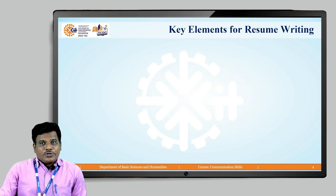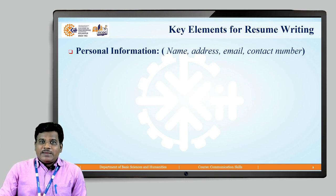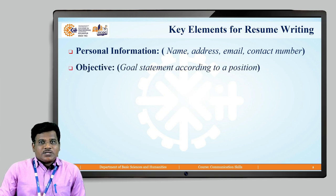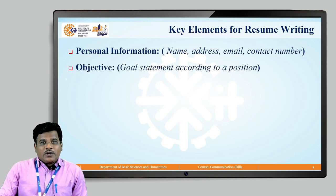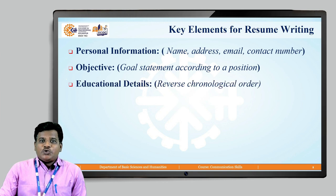Now let's understand the different key elements of a resume. The first is personal information, which includes your name, address, email, and contact number. Next is the objective line — a goal statement according to the position you are going to hold in the organization. Then educational details, listed in reverse chronological order, with current education at the top.